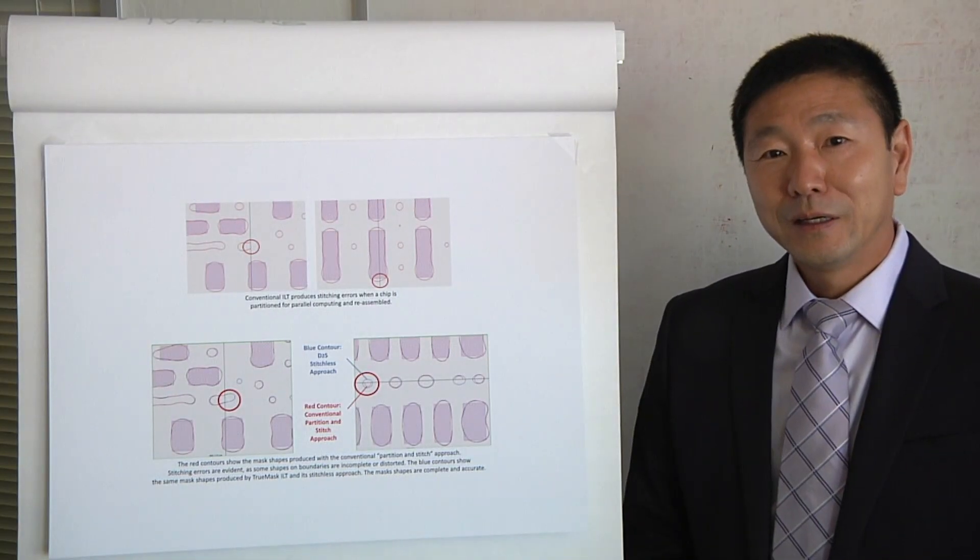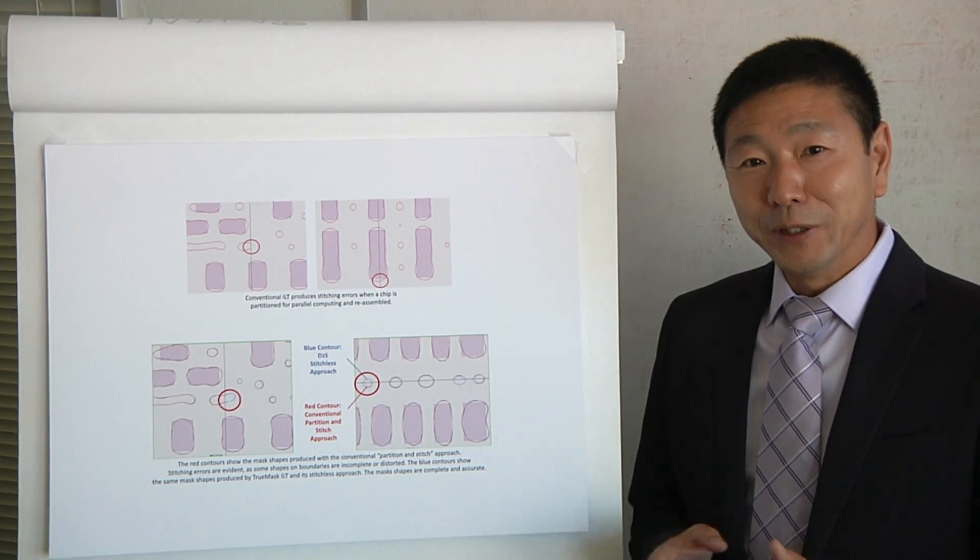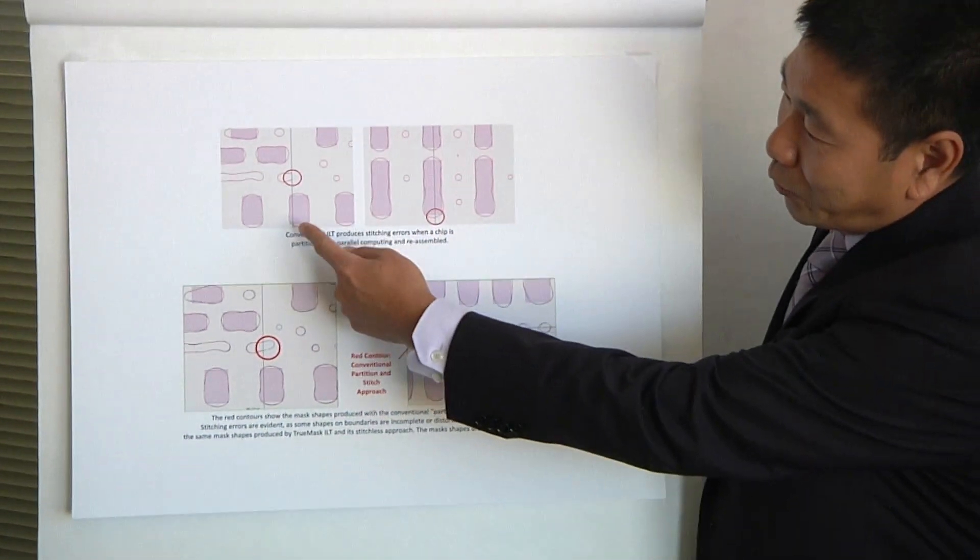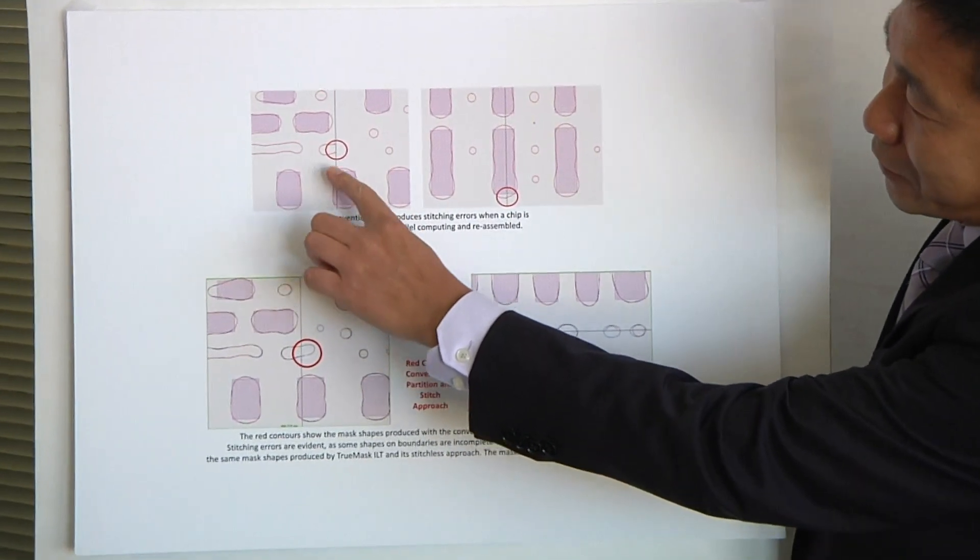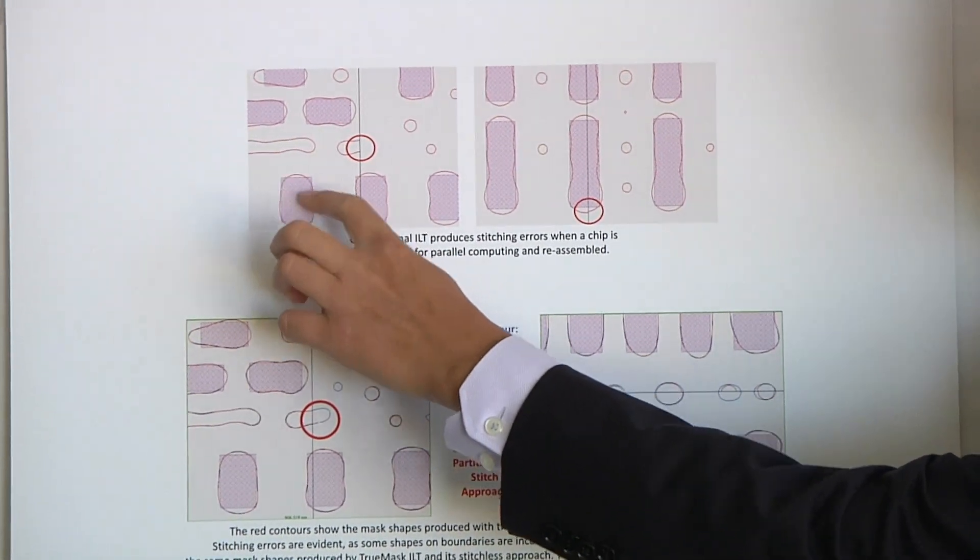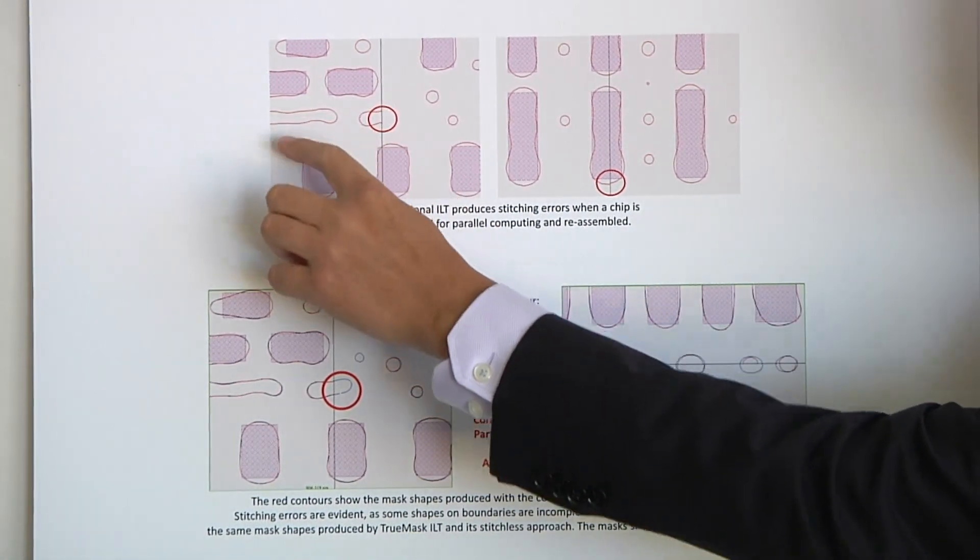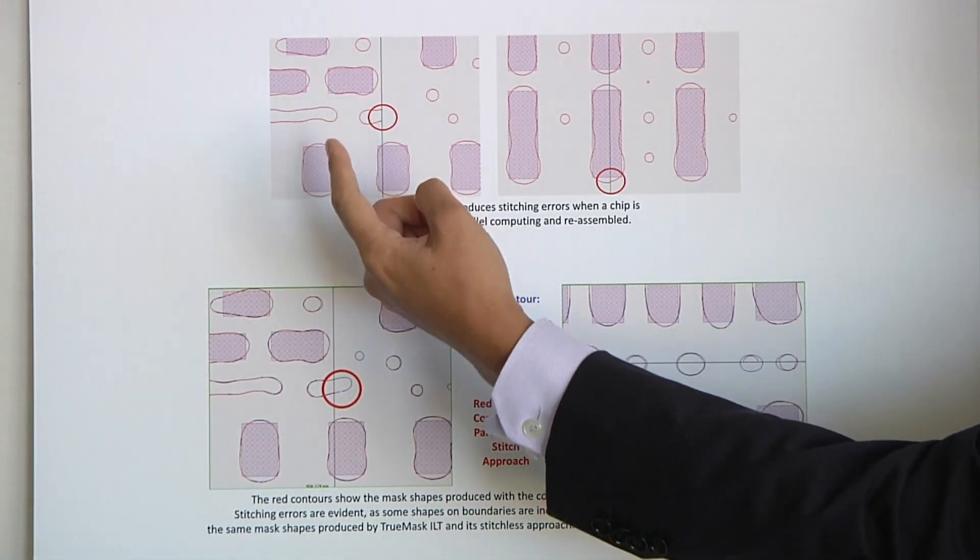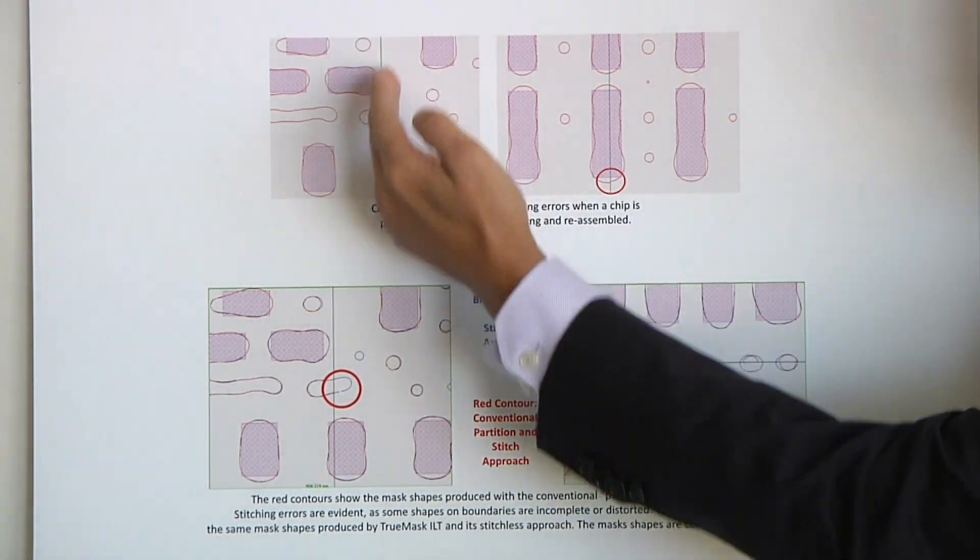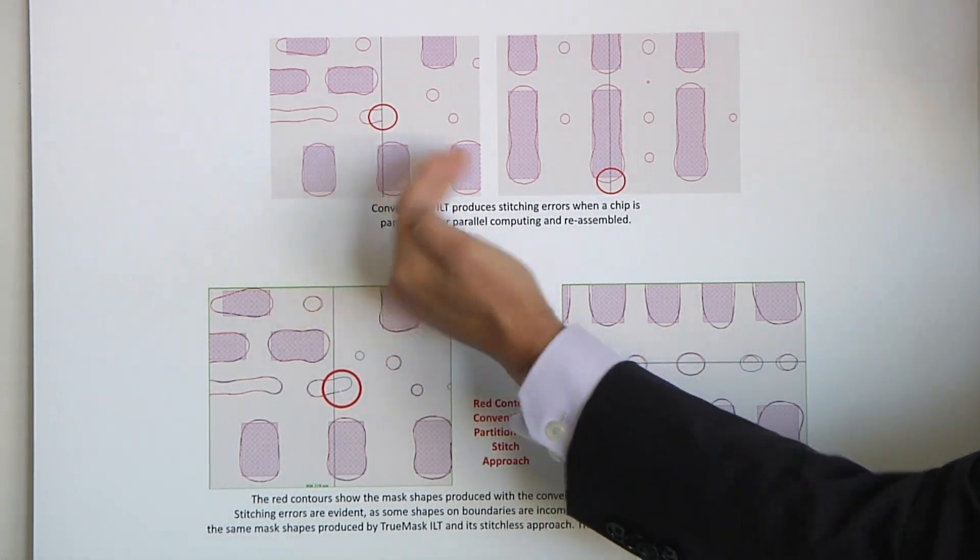So Leo, what are we looking at here? Yeah, here I'm showing an example of this stitching error if we do it in a conventional way. So first, what you are looking at here, this is basically what you are seeing is the wafer target. It's a random contact. Then, those contours, the right contours, are the curving near ILT solution.